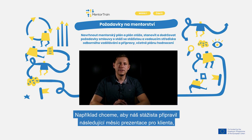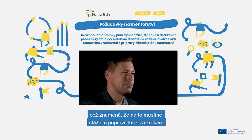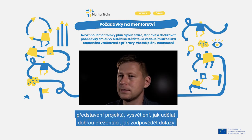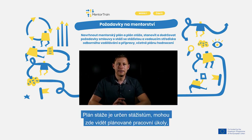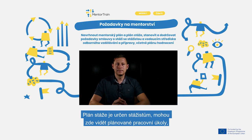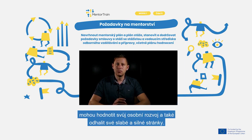For example, we want our apprentice to do a presentation for a client next month, which means we have to prepare the apprentice for that step by step: introducing the project, explaining how to make good presentations, and how to answer questions. The apprenticeship plan is for the apprentice, where they can see planned work tasks, evaluate personal development, and identify, for example, weaknesses and strengths.